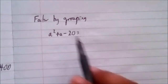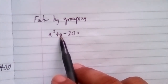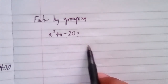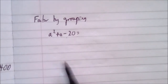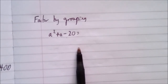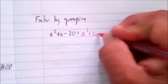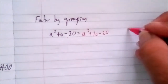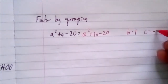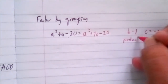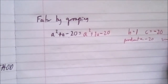Our strategy is to express the middle term of the trinomial as a difference of two carefully chosen terms, to produce an equivalent four-term polynomial that can be factored by grouping. Since this trinomial equals a squared plus 1a minus 20, we identify that b is 1 and c equals negative 20. Key point: the product must equal negative 20 and the sum must equal 1.